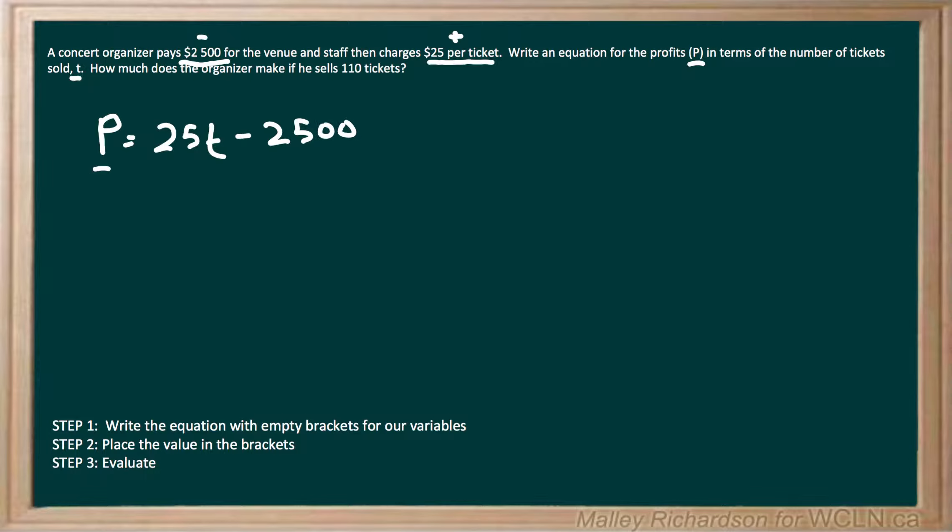So we have our profit, which is the total amount of money that he will make, which is $25 multiplied by the number of tickets he sold, and then subtracted by the cost of the venue. So now let's place brackets for our variables. We have P equals 25 empty brackets minus 2,500.